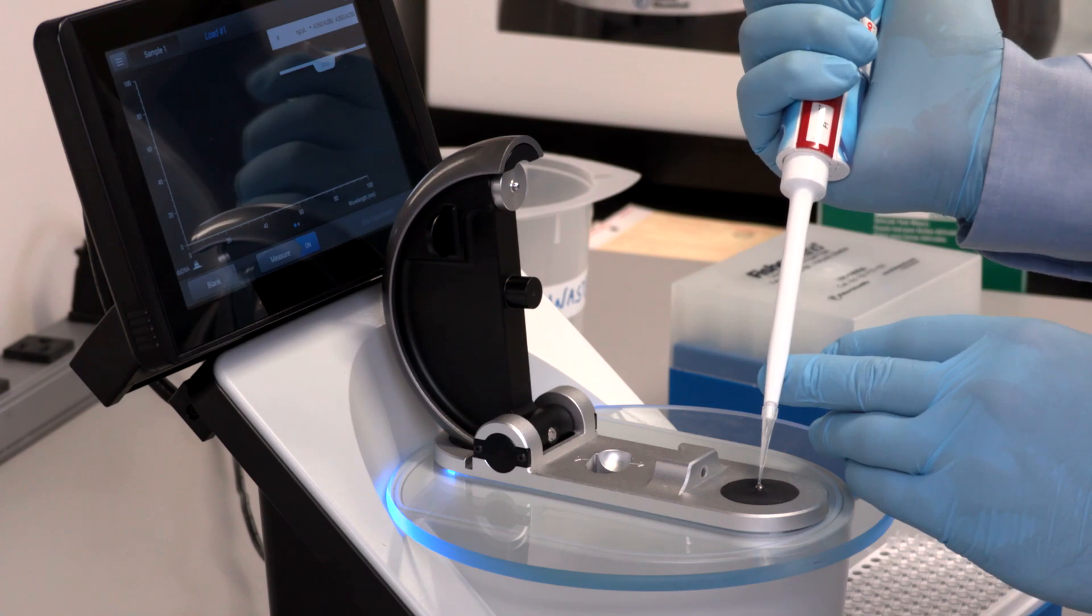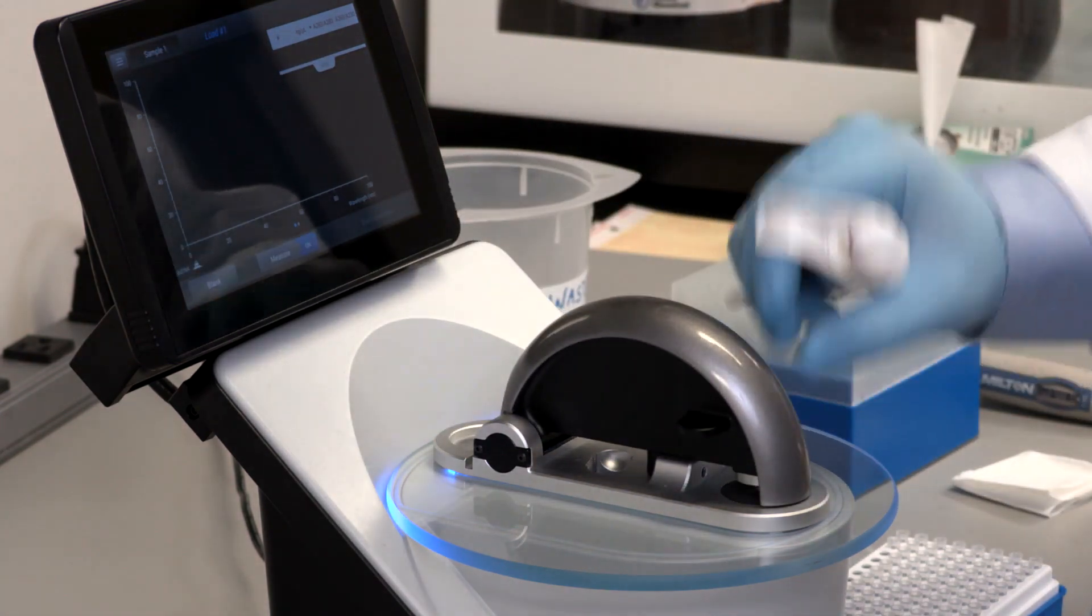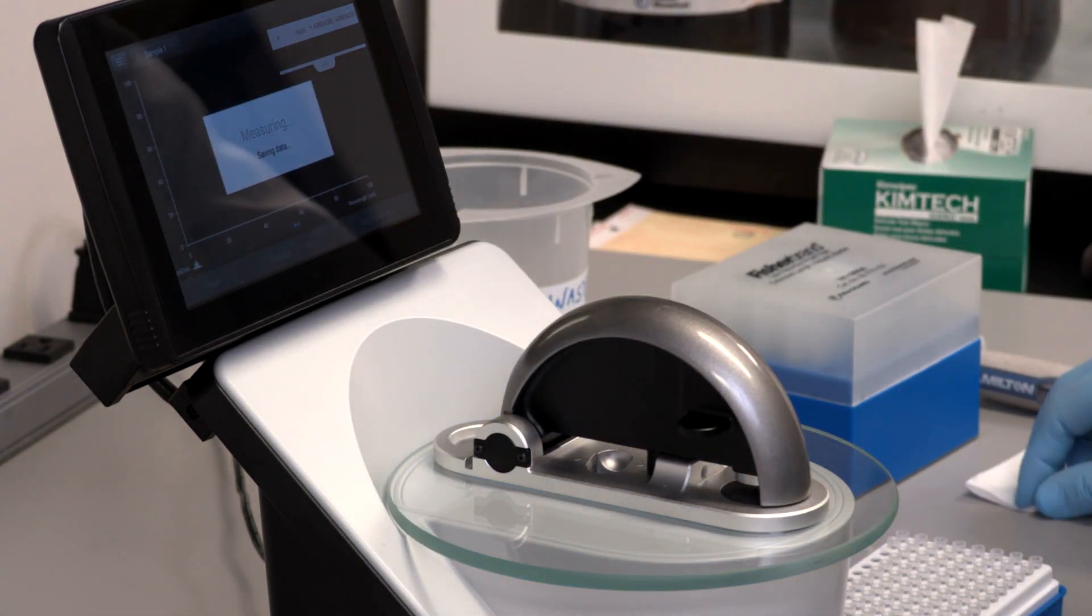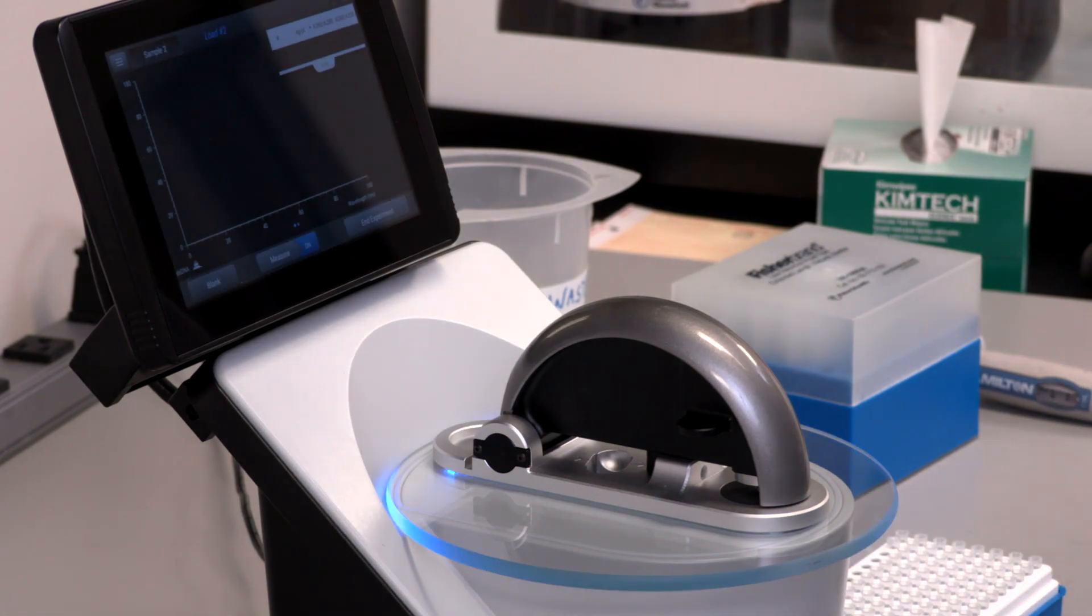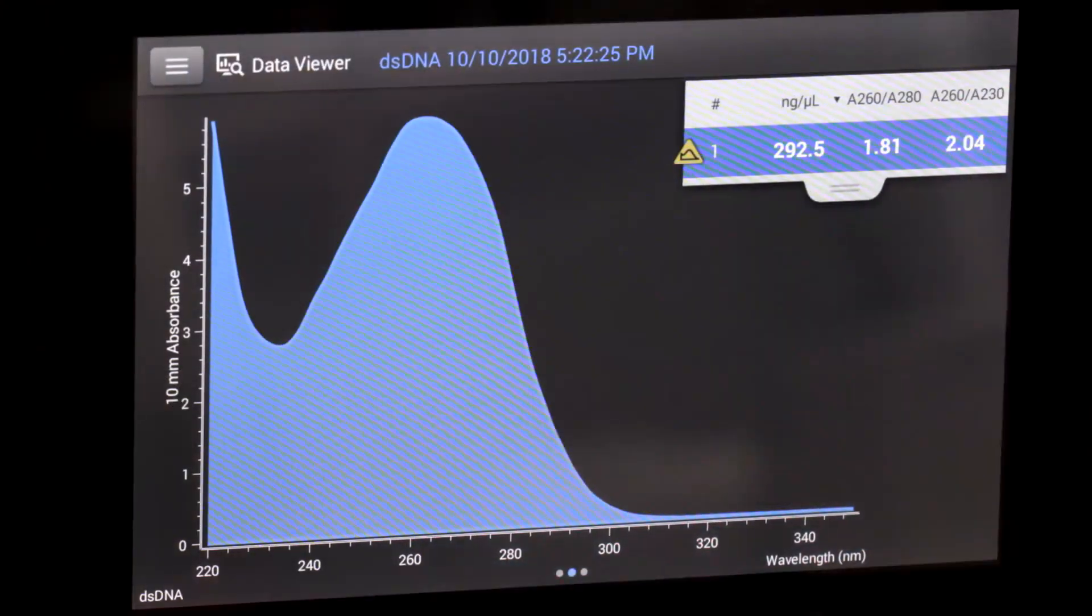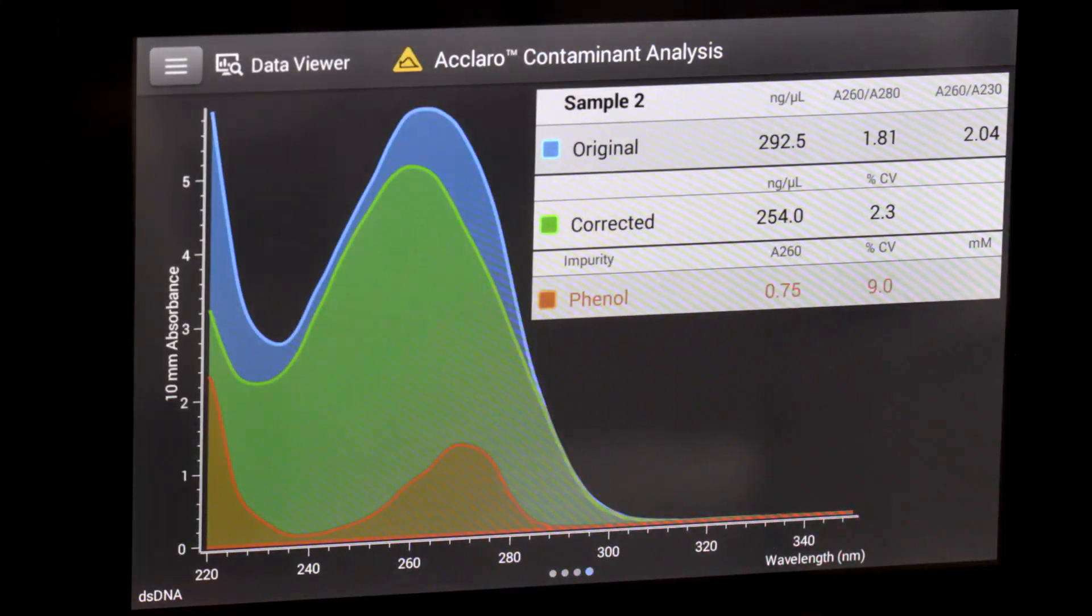This software is called the Thermo Scientific Acclaro Sample Intelligence Technology. It identifies the presence of common contaminants in your sample and calculates an approximate concentration of the contaminant. The software displays a yellow triangle when it identifies a contaminant.